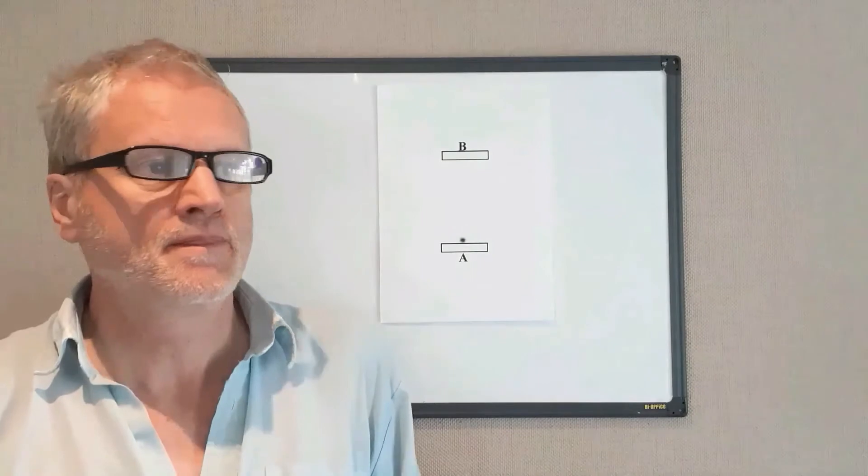If you're stationary relative to the clock, it goes vertically. If the clock's moving relative to you, you would see it moving diagonally. Which means it has further to go at the same speed, because light is always the same speed, and so it goes slower.